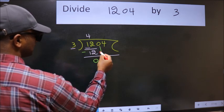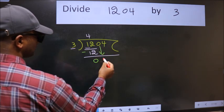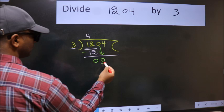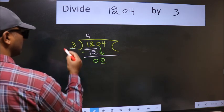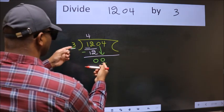After this, bring down the beside number. So, 0 down. Now, here we have 0 and here 3. 0 is smaller than 3.